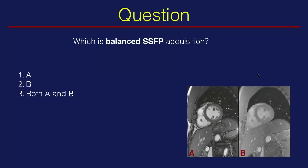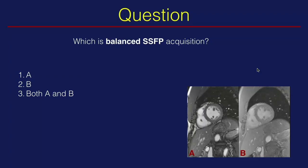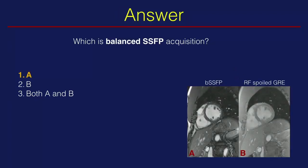Audience quiz: which image is a balanced SSFP acquisition — 1A, B, or both A and B? The answer is balanced SSFP, which shows bright fat signal and very good dark signal in all the muscles, indicating it is a balanced SSFP sequence.